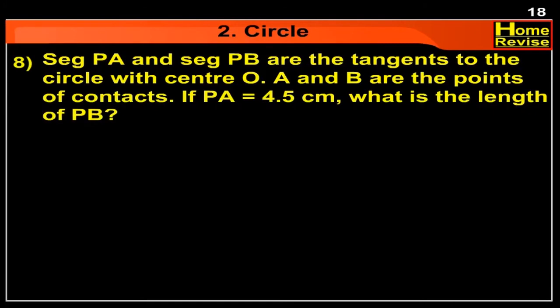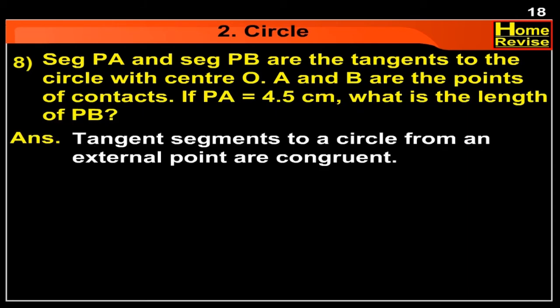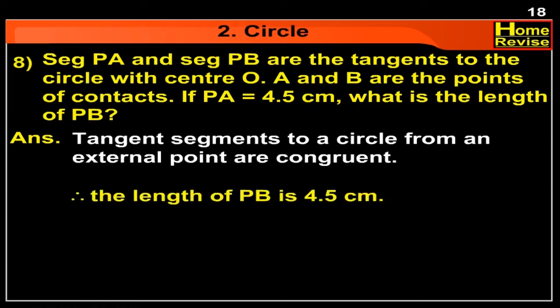Segment PA and segment PB are the tangents to this circle with center O. A and B are the points of contact. If PA is equal to 4.5 cm, what is the length of PB? Answer: Tangent segments to a circle from an external point are congruent. Therefore, the length of PB is 4.5 cm.